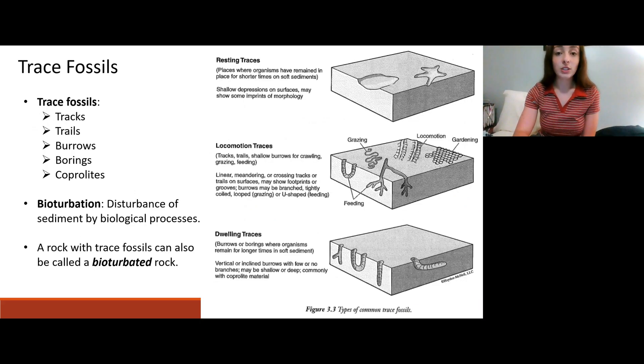The next thing we're going to be talking about are trace fossils. Trace fossils are also very important for biostratigraphy. Unlike body fossils, trace fossils are just fossils of traces the organism left behind rather than the organism itself such as tracks, trails, burrows, borings, or coprolites. When you have sediment that has been disturbed by these biological processes this is called bioturbation. You can see that common trace fossils include resting traces, local motion traces, feeding and grazing traces, and dwelling traces in which organisms are burrowing and boring to dwell in sediment.